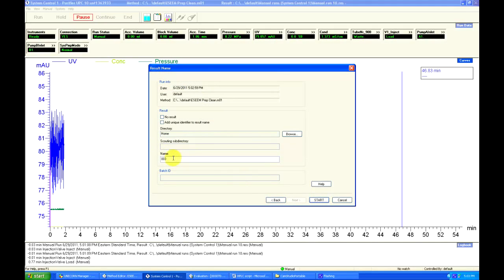Clicking Next two more times shows the result name window. This is where we can name our result file appropriately, as well as control where this file is saved. Clicking Start initializes the run. Now we wait to collect our peaks.